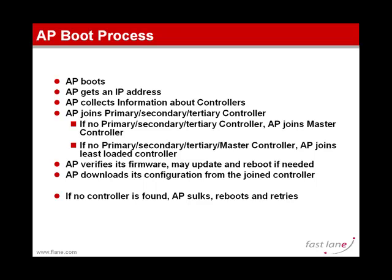You may configure the access point to have a primary, secondary, or tertiary controller. This is basically a name you provide to the access point — for example, if a controller called WLC1 answers, the access point joins that one first. If that one doesn't answer, it falls back to the secondary or tertiary. Once it gathers all controller responses, it checks the names. If one matches the primary, secondary, or tertiary configuration, it joins that controller.